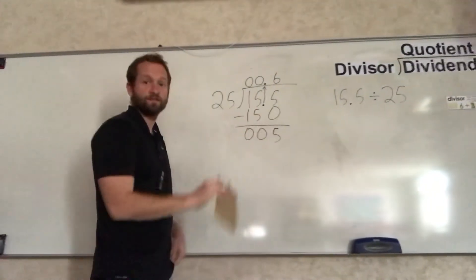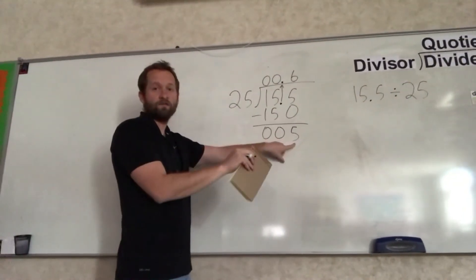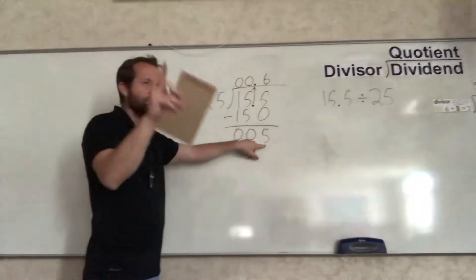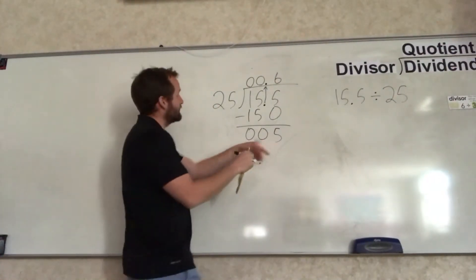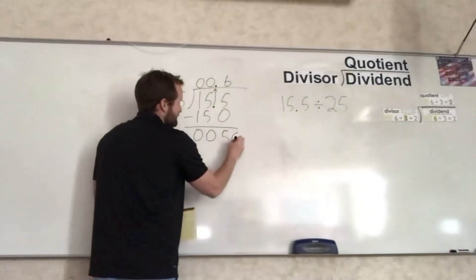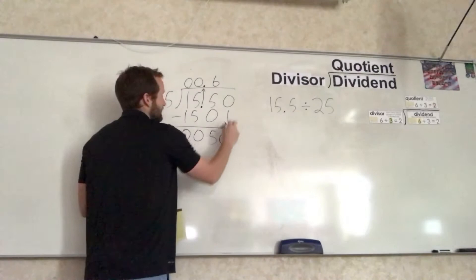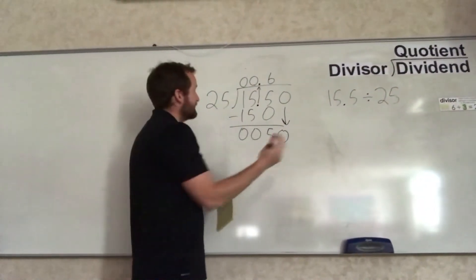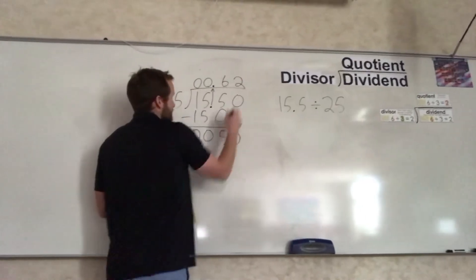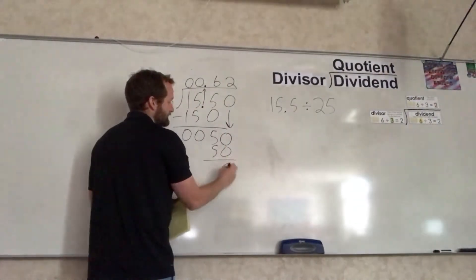Let's ask ourselves that same question. Does 25 fit into 5? No, it's too big. When that is the case, what we have to do is annex a 0, which means we take the 0 and bring it down. Now, does 25 fit into 50? It does. It fits in twice. 2 times 25 is 50. We are left with 0.